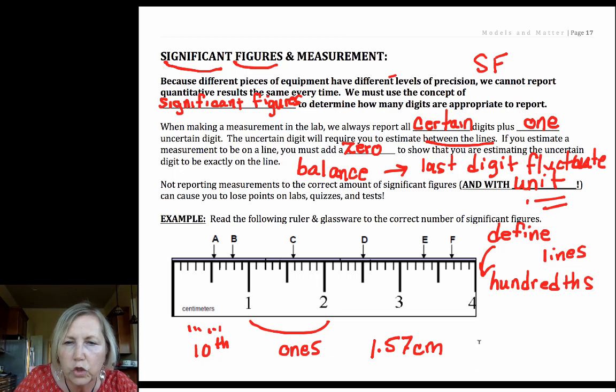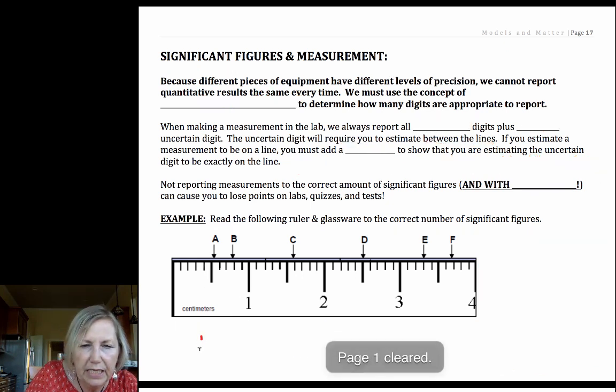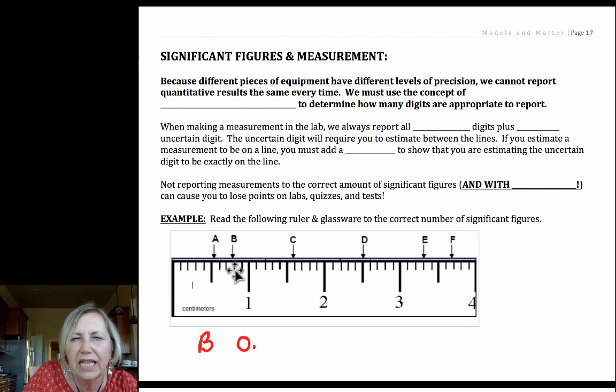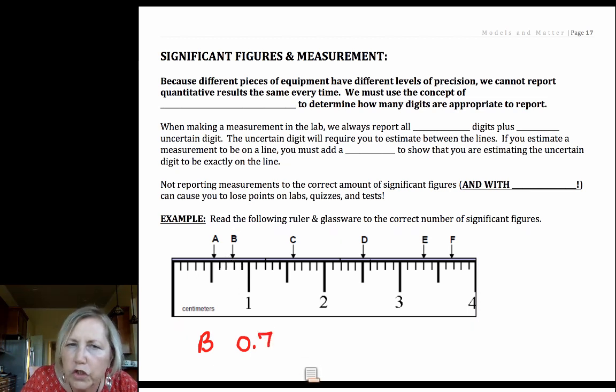I'm not going to do all of these. Let me just do two more. Let's go ahead and do B. So it's less than 1, so I'm going to put a 0 there because I know it's less than 1. And then I can go 1, 2, 3, 4, 5, 6, 7, 8. It's greater than 7 but less than 8. I know for sure that that's a 7 and it's not an 8. And now I have to estimate between those lines. It's closer to the 8 than the 7. So I'm going to call that 0.78 centimeters. Bear in mind that that 8 is our uncertain or estimated digit.